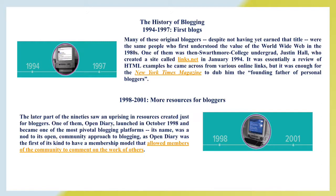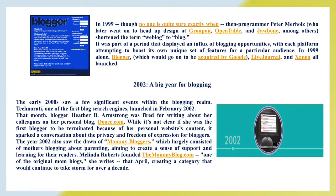1998–2001: more resources for bloggers. The later part of the 1990s saw an uprising in resources created just for bloggers. One of them, Open Diary, launched in October 1998 and became one of the most pivotal blogging platforms. Its name was a nod to its open community approach to blogging, as Open Diary was the first of its kind to have a membership model that allowed members of the community to comment on the work of others. In 1999, programmer Peter Merholtz shortened the term 'web blog' to 'blog,' part of a period that displayed an influx of blogging opportunities, with each platform attempting to boast its own unique set of features for a particular audience.